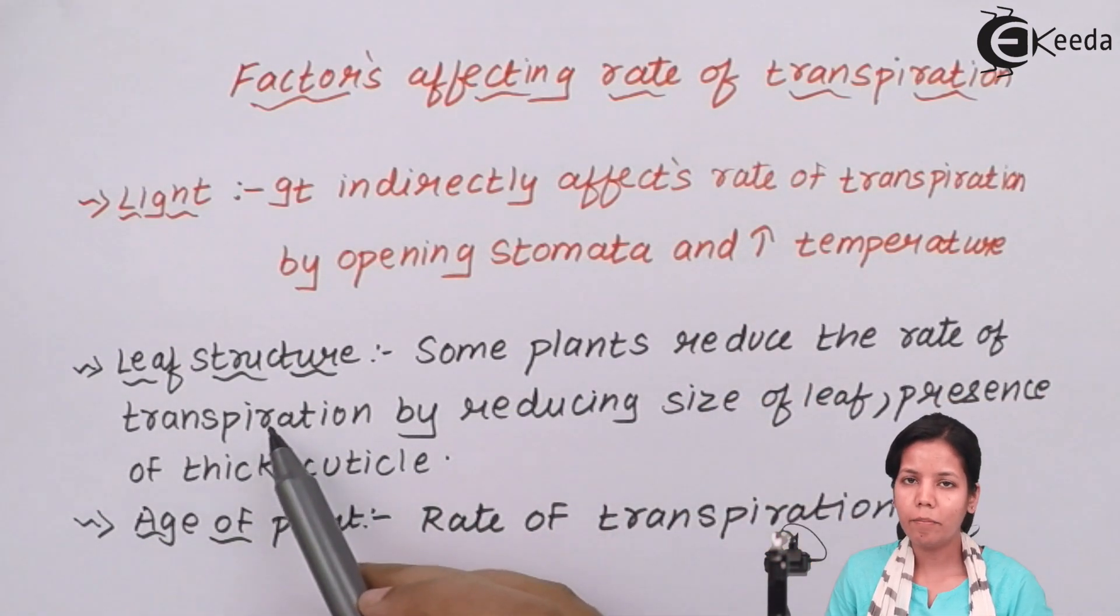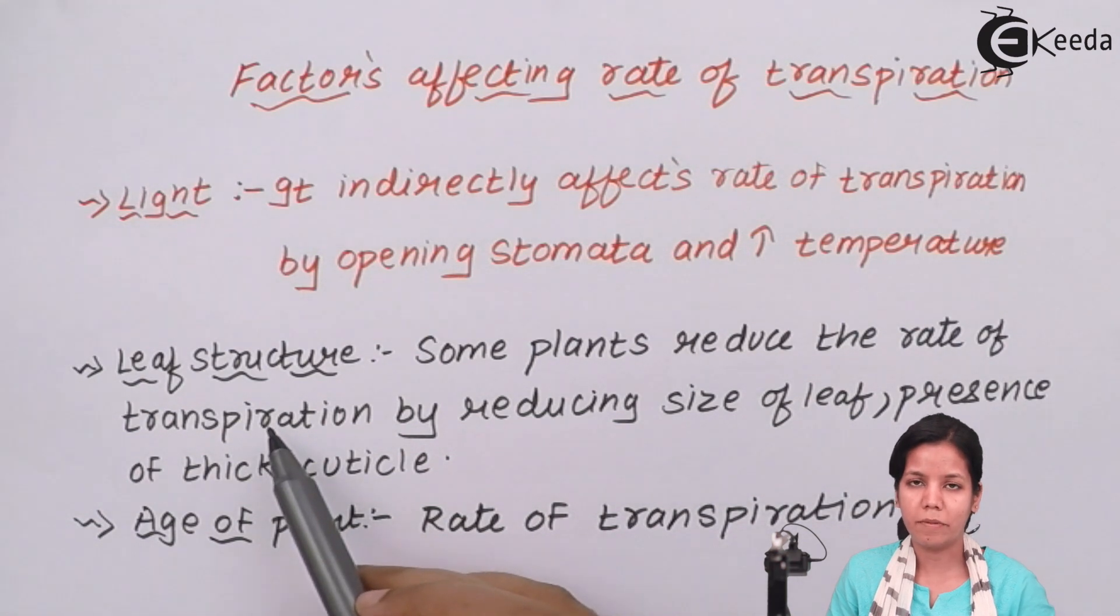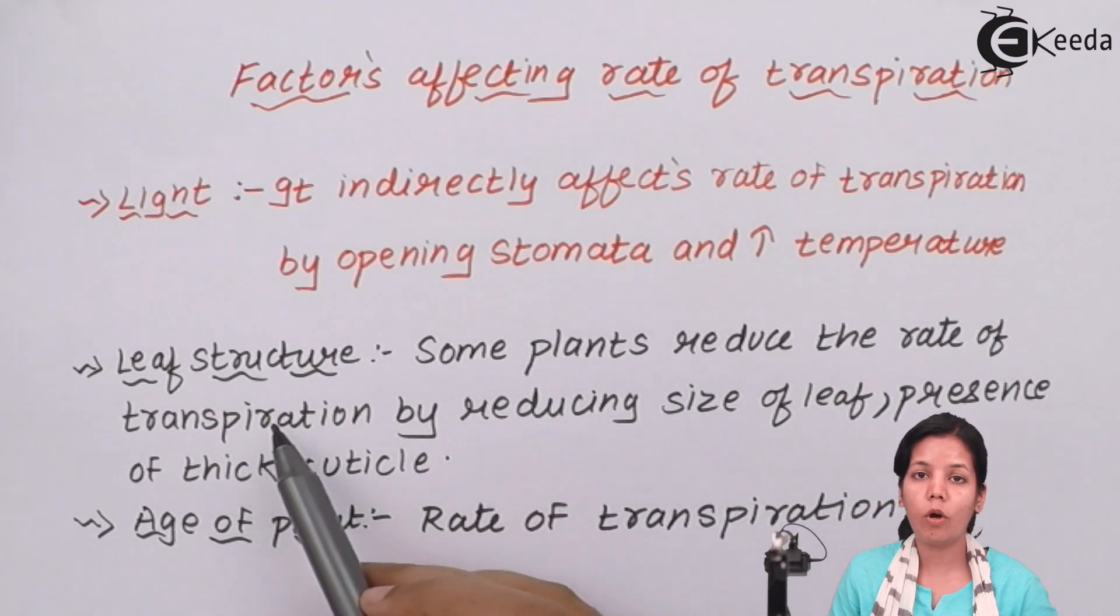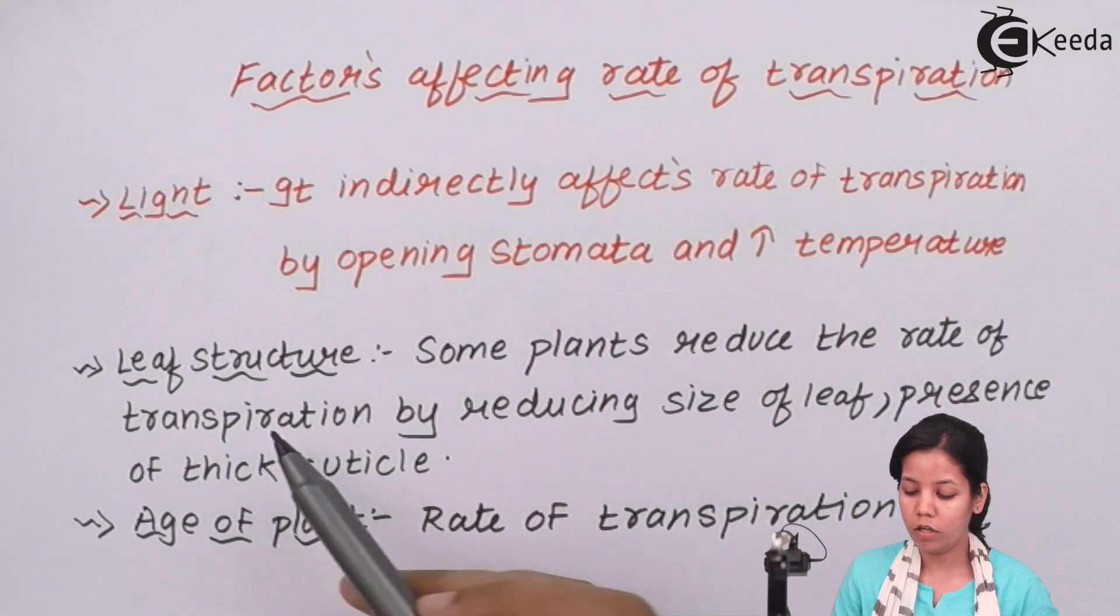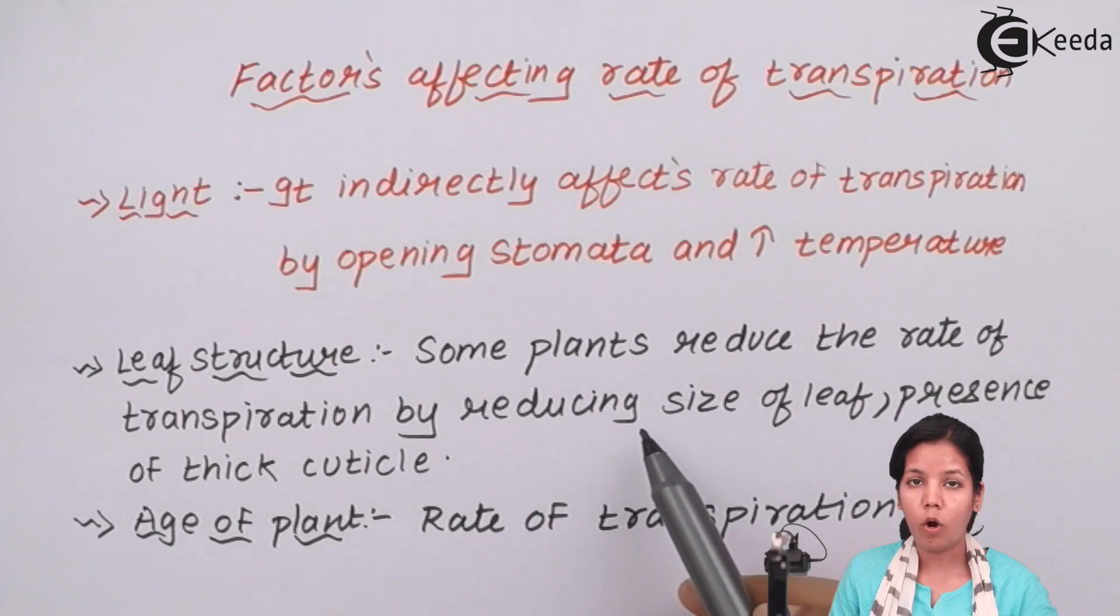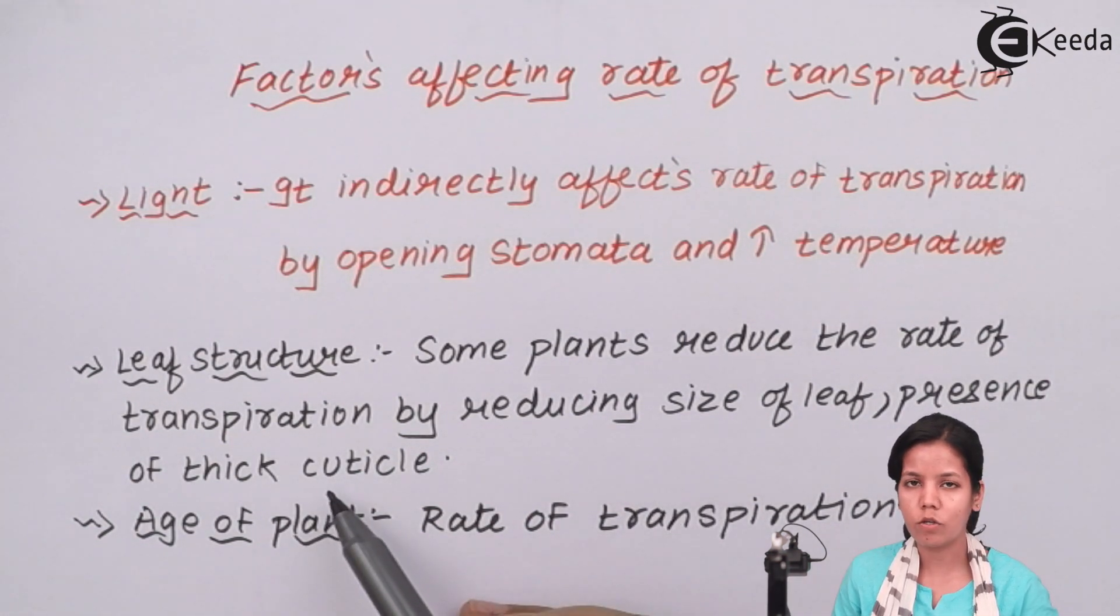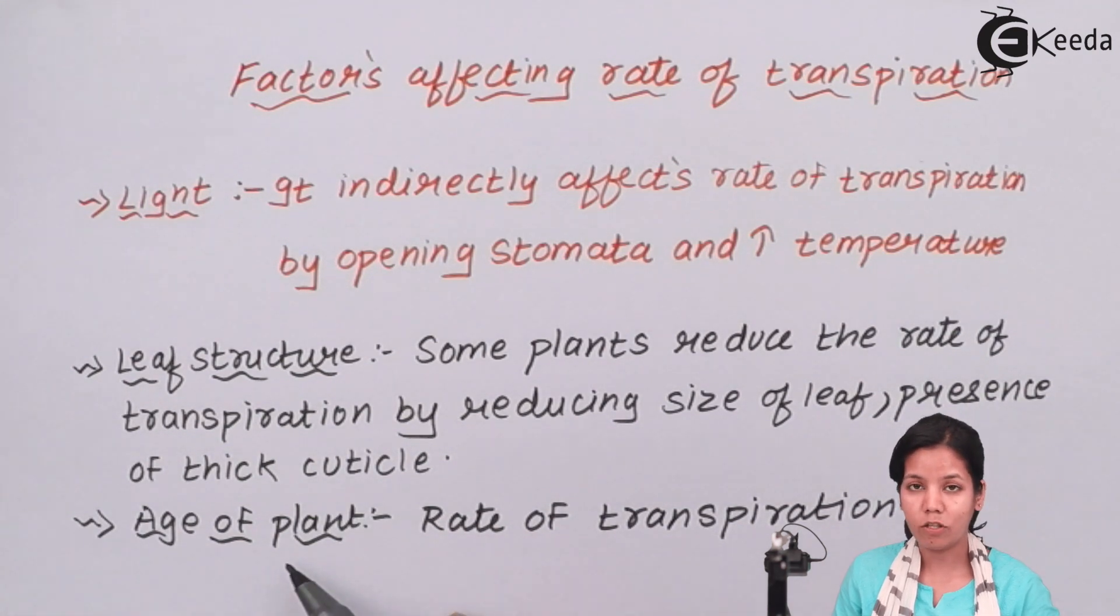Leaf Structures. Some leaves try to stop transpiration specially xerophytic leaves or desert leaves because we all know in desert there is shortage of water. Why would a plant want to lose excess of water? So they reduce their leaf size or the presence of thick cuticles or openings prevent the loss of water.